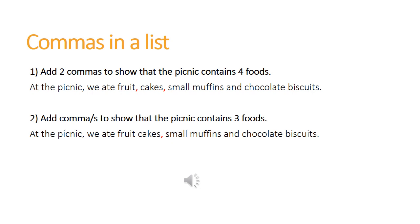Hopefully, this activity has shown you how important it is that commas are in the right place to read the list accurately. Remember to always read the question carefully — sometimes it tells you how many commas to use and clearly tells you how many foods your picnic needs to contain. In this example, 'fruit cakes' could be distinguished as two items — fruit and cakes separately — or it could be one item, fruit cakes. In sentence number one, I wanted to have four foods: fruit, cakes, small muffins and chocolate biscuits. Therefore, my comma needs to be after 'fruit' and after 'cakes.' In sentence number two, I wanted there to be three foods, so fruit cakes comes together as one item. This time I use my comma after 'cakes': 'At the picnic, we ate fruit cakes, small muffins and chocolate biscuits.'